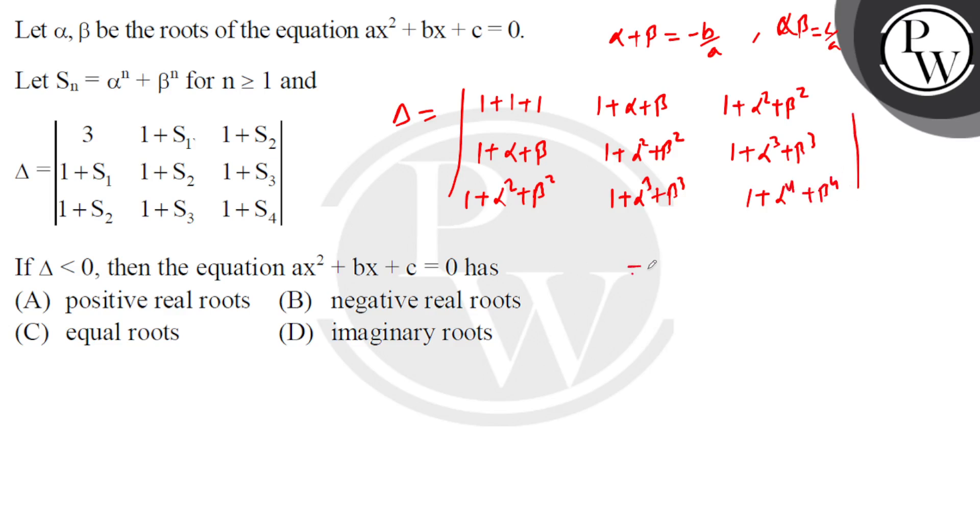This given determinant can be written as the product of two determinants: one with entries 1, 1+α, 1+α², and another with 1, 1, 1, then 1, α, β, then 1, α², β².